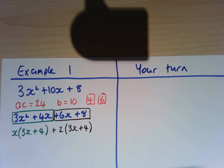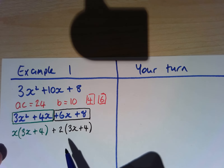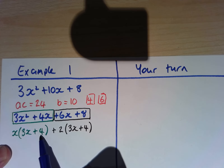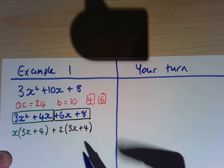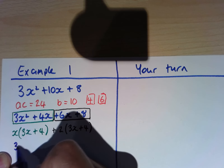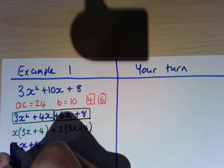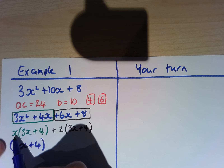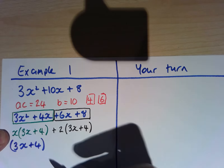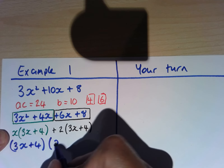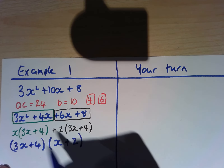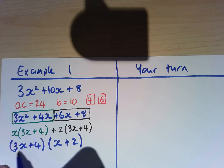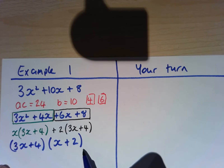My next step is to put this all together. I've got 3x plus 4 and 3x plus 4 — that's a common factor of the whole thing. So I'm going to write 3x plus 4, and I'm multiplying it by x and by 2, so in here we're going to have x plus 2. This factorises to give us (3x + 4)(x + 2).